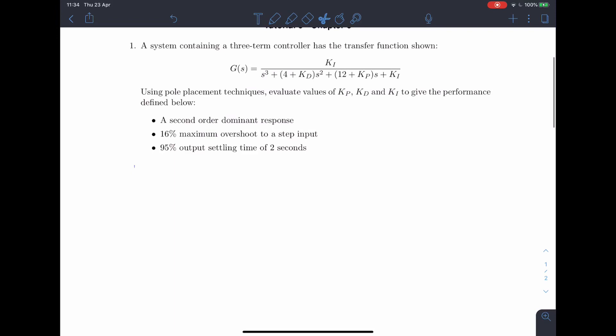So 16% overshoot, from the datasheet or second order response graphs, we can see that this means that the zeta, the damping ratio must be around 0.5.